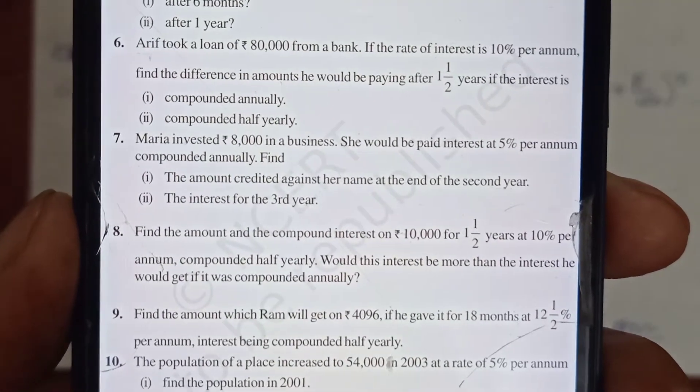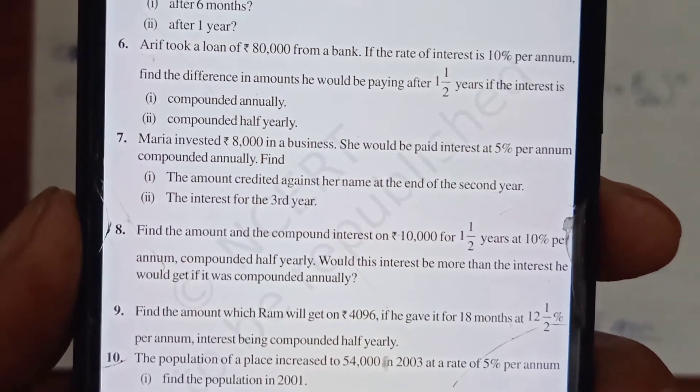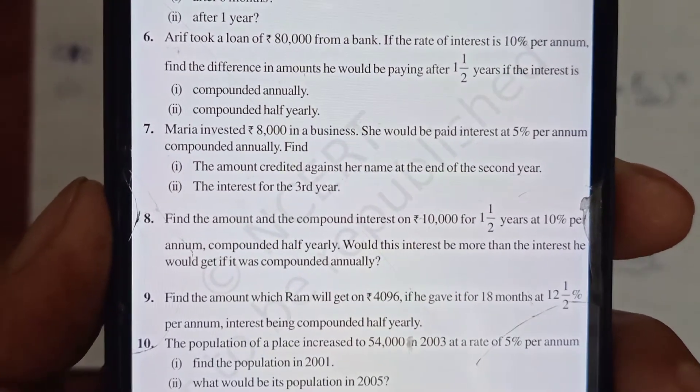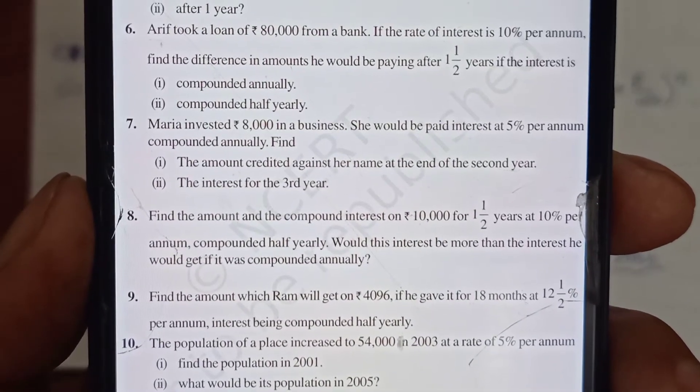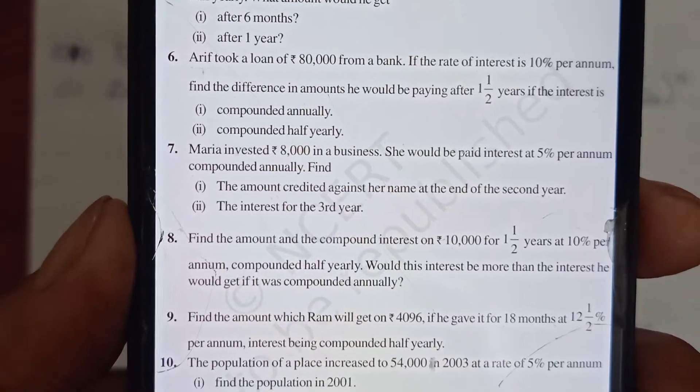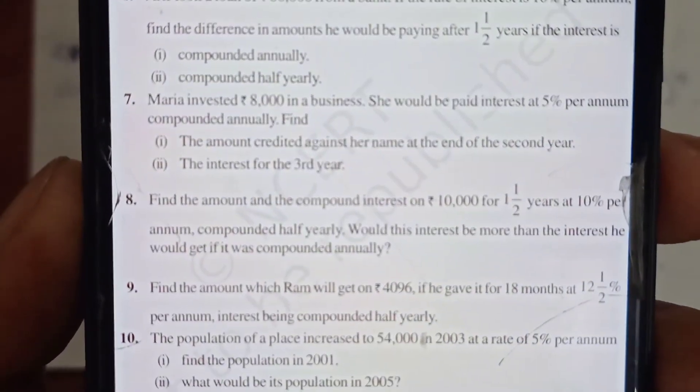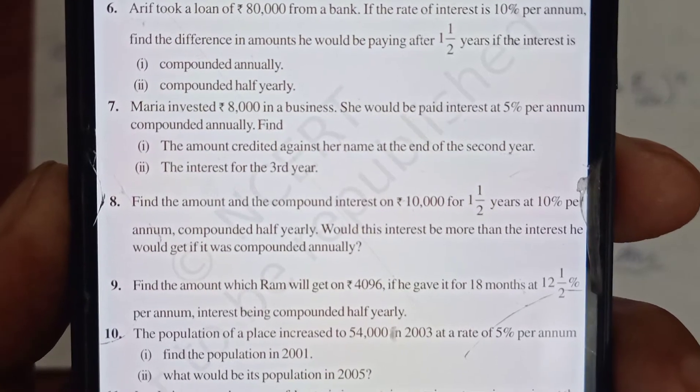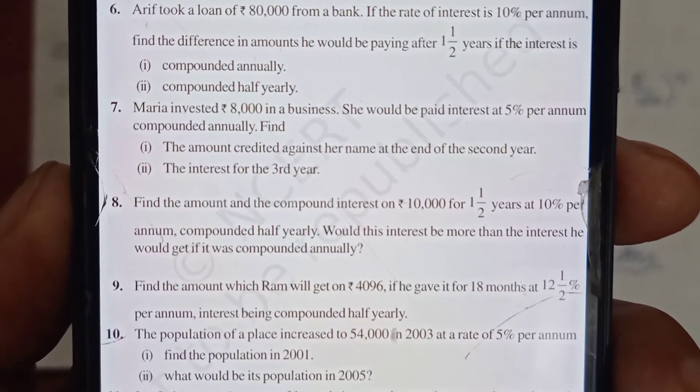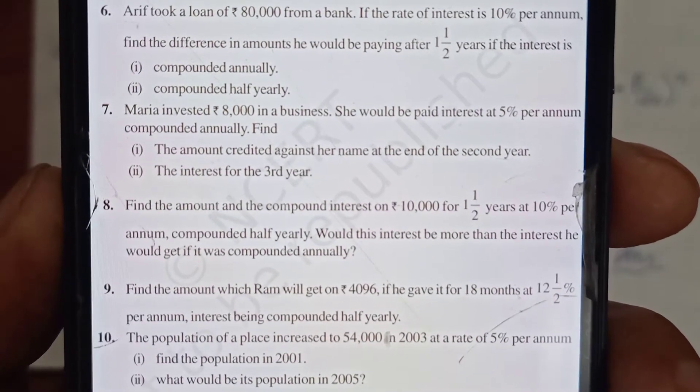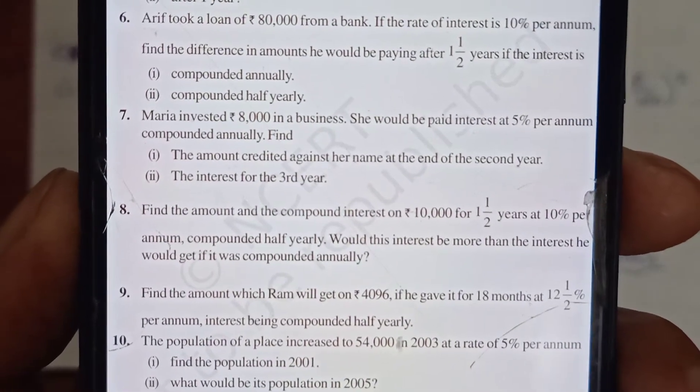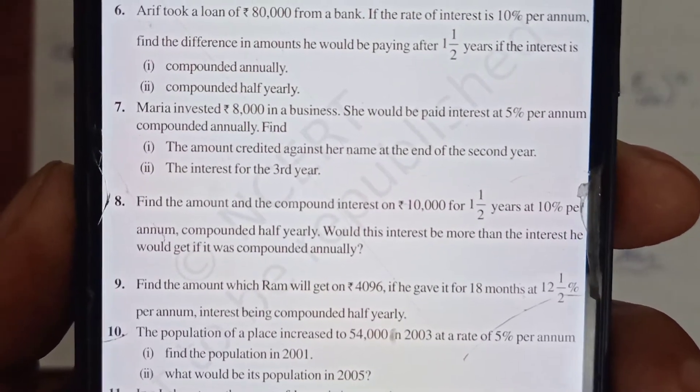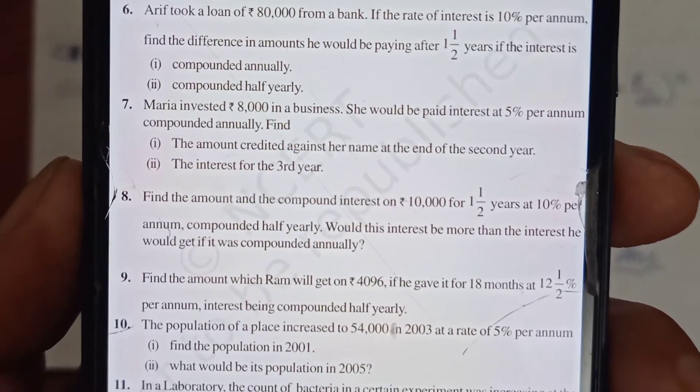All your questions are nearly similar, making use of the same formula. We've dealt with whatever happens if it is being compounded semi-annually and if it is fractional time. Questions 7, 8, and 9 I would leave for you to try on your own. Question 7: Maria invested ₹8,000 in a business. She would be paid interest of 5% per annum compounded annually. Find the amount credited against her name at the end of second year and the interest for the third year.